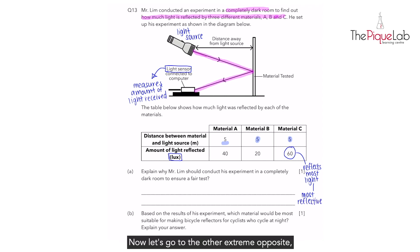Now let's go to the other extreme opposite. Which material reflects the least light? That would be material B. So material B reflects the least light. That means we can confirm that it is the least reflective material. With that being done, let's take a look at part A.